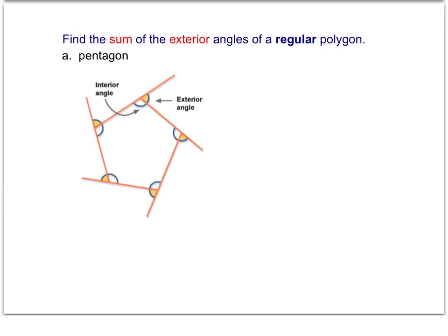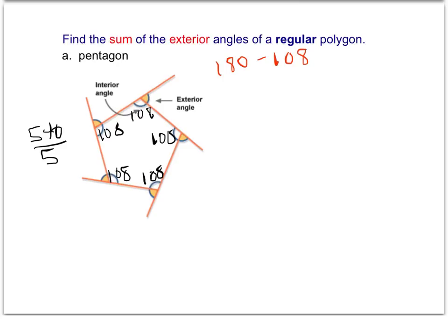If we go ahead now and try this with the problems that we have, we can use the same thinking for our pentagon. We found before that an interior angle of a pentagon is 108 degrees, because the sum of the pentagon's interior angles, 540 degrees, is evenly distributed between the five interior angles. Knowing each interior angle is 108 degrees, we can find the exterior angle by subtracting 108 from 180, because these two angles form a linear pair.